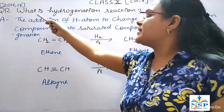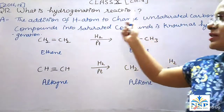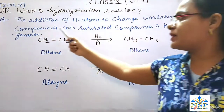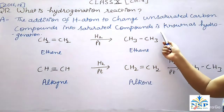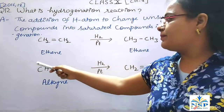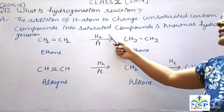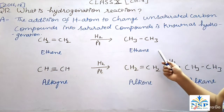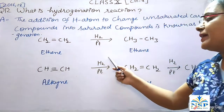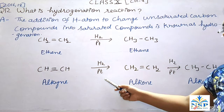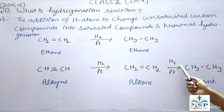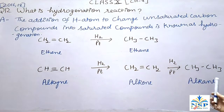Our next question: What is a hydrogenation reaction? The addition of hydrogen atoms to change unsaturated carbon compounds into saturated compounds is known as a hydrogenation reaction. For example, when ethyne reacts with hydrogen in the presence of a catalyst, it gives ethane. Similarly, alkyne when reacts with hydrogen in the presence of a catalyst gives alkene, and alkene in the presence of a catalyst reacts with hydrogen to give alkane.